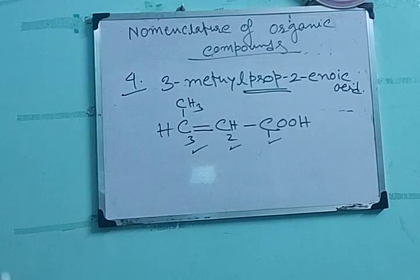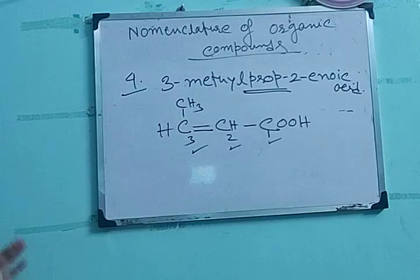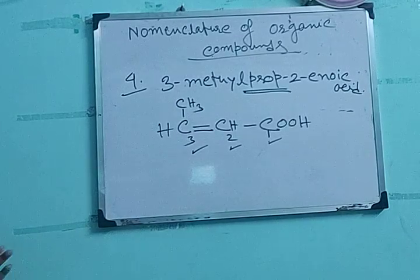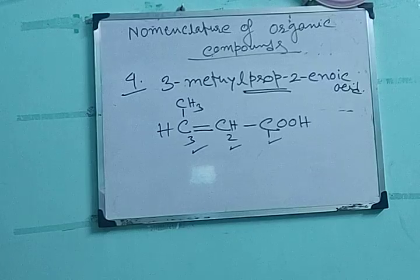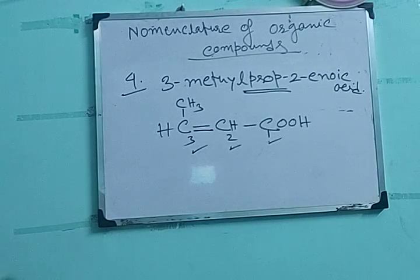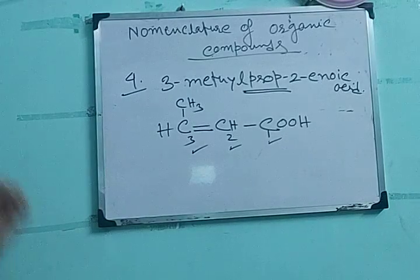So today's class we have discussed 4 compound examples of how to draw organic compound structures from a given IUPAC name. In the next class we will discuss more examples where more than one functional group is present — how to draw the structure and how to do organic nomenclature in those cases. Thank you.